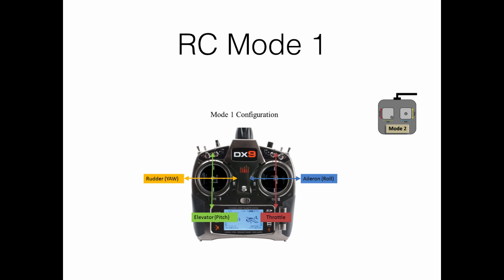So let's look at mode number one. In mode one, the right stick is assigned to control the aileron, that is the roll, when it is moved left and right, and to control the throttle when it is moved up and down.